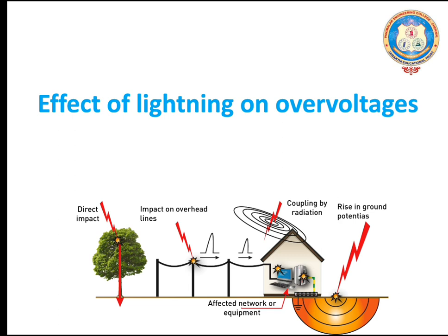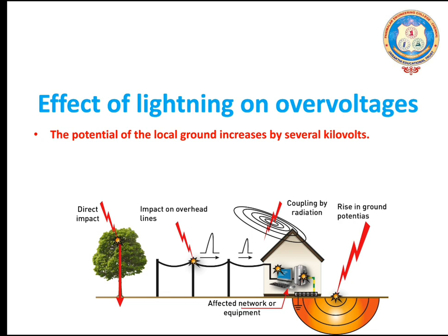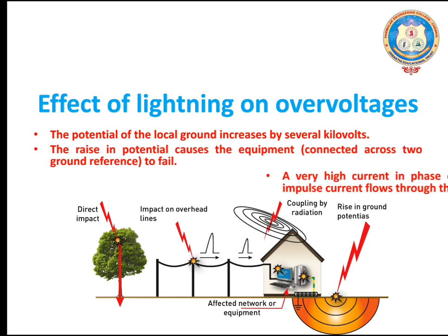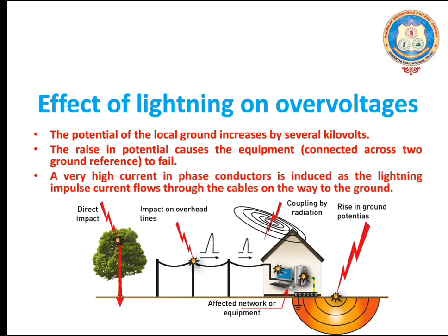What are the effects of lightning on over-voltages? The potential of the local ground increases by several kilovolts. The rise in potential causes the equipment frame connected across the two ground references to be stressed. A very high current in the phase conductor is induced as the lightning impulse current flows through the cables on the way to the ground.